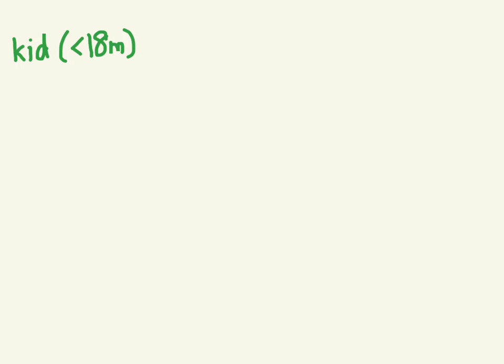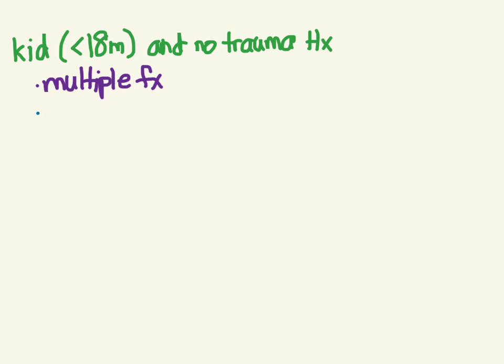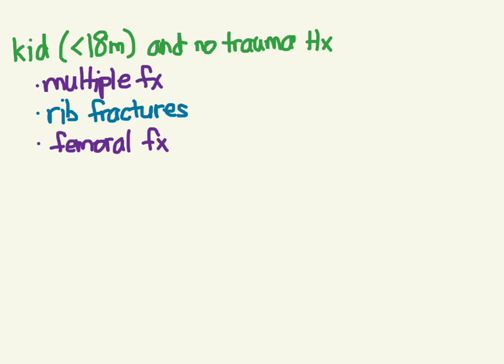Here are some rules of thumb from a systematic review in the British Medical Journal about when to suspect physical abuse — especially in children under 18 months with no clear trauma history and no condition like osteogenesis imperfecta. Multiple fractures are more common in abuse. Rib fractures carry a 7-in-10 chance of abuse. Femoral fractures in non-walking children have a 1-in-3 to 1-in-4 chance. A humerus fracture carries about a 50% chance of abuse, especially under age three.